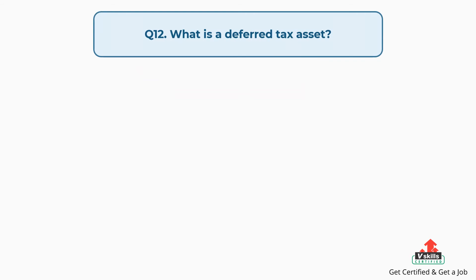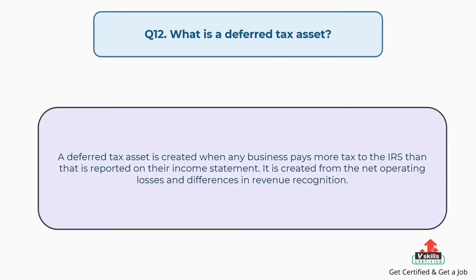Question number twelve: what is a deferred tax asset? The answer is, a deferred tax asset is created when any business pays more tax to the revenue service than what is reported on their income statement. It is created from net operating losses and differences in revenue recognition.